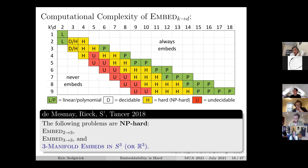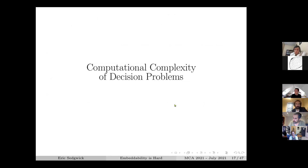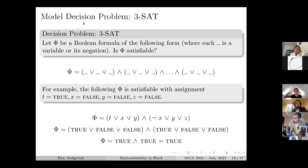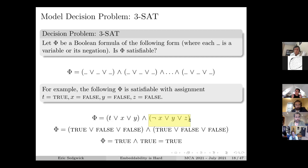I want to talk about computational complexity and give you some loose idea of what 'hard' means. A decision problem is in P - which should be considered easy or polynomial - if it can be decided in polynomial time based on the size of the input. NP means basically easy to verify: if the answer is yes, there's a solution I can hand to you that you can verify and check quickly in polynomial time.